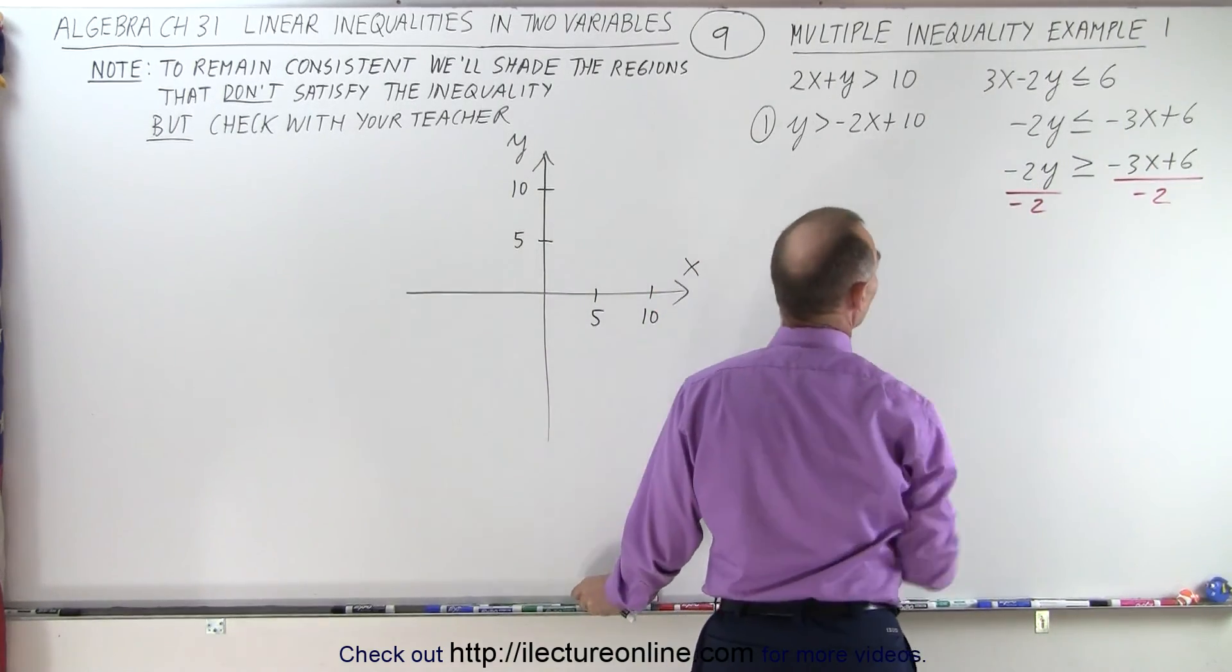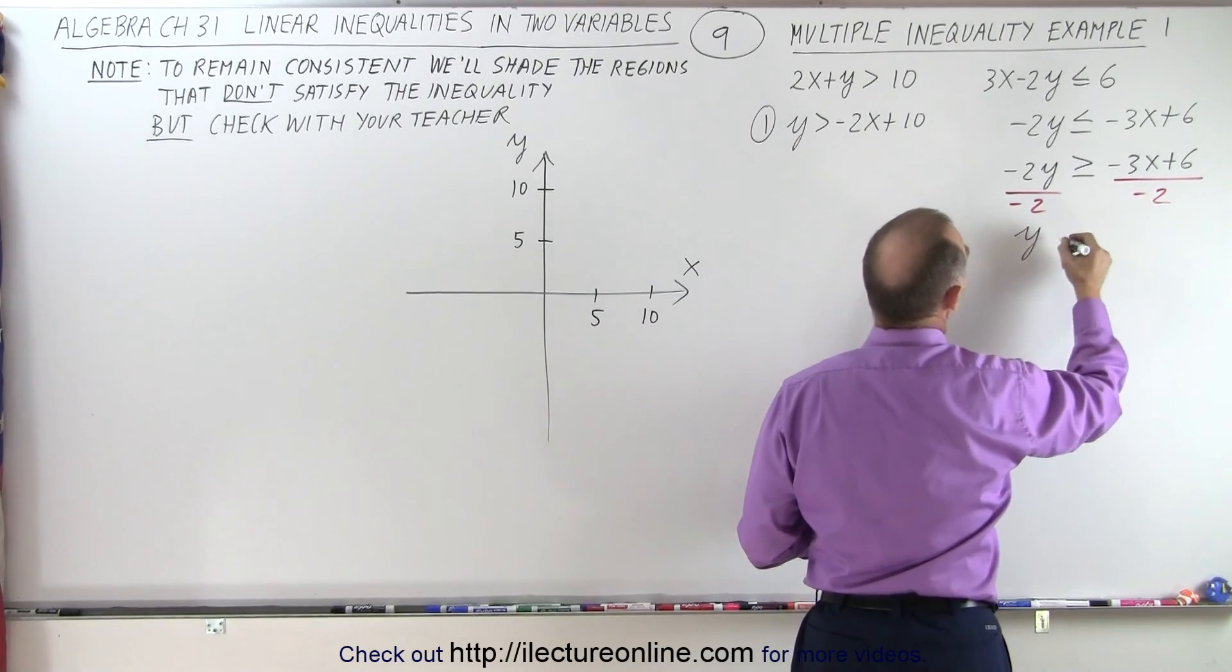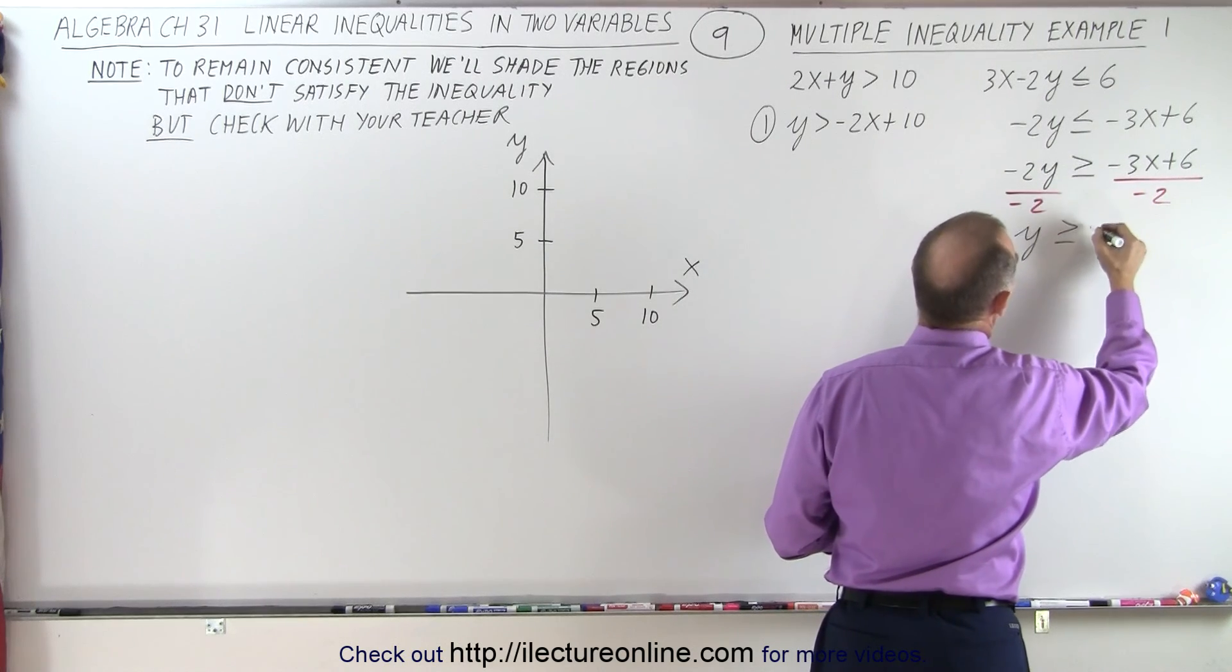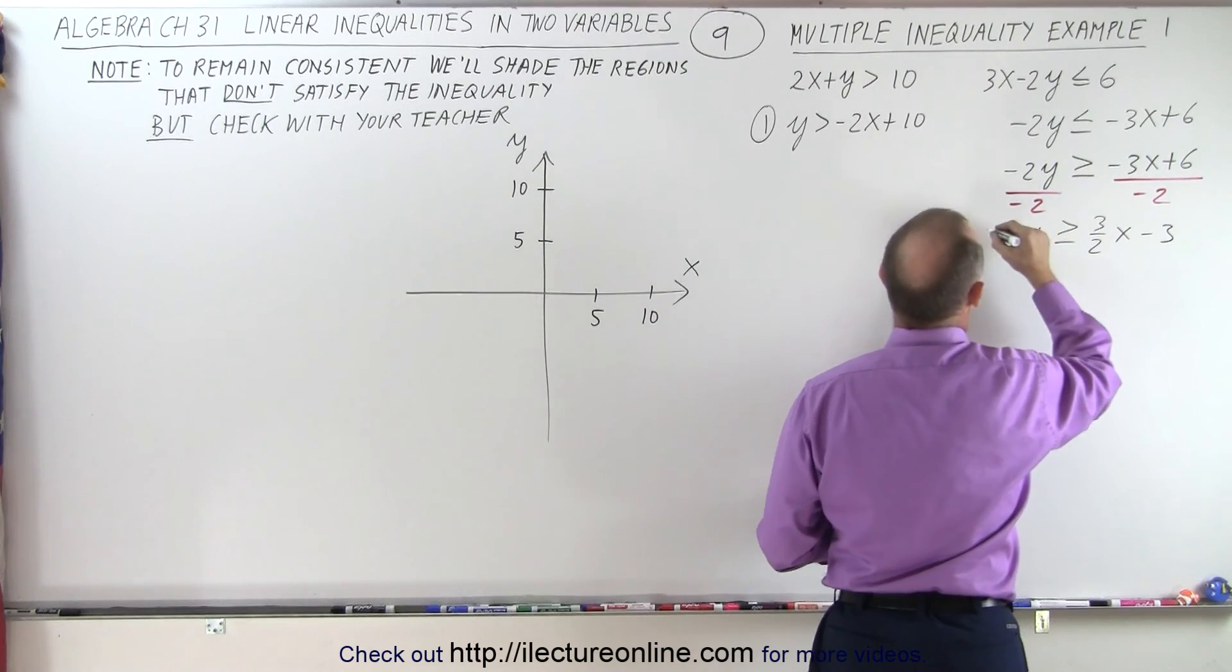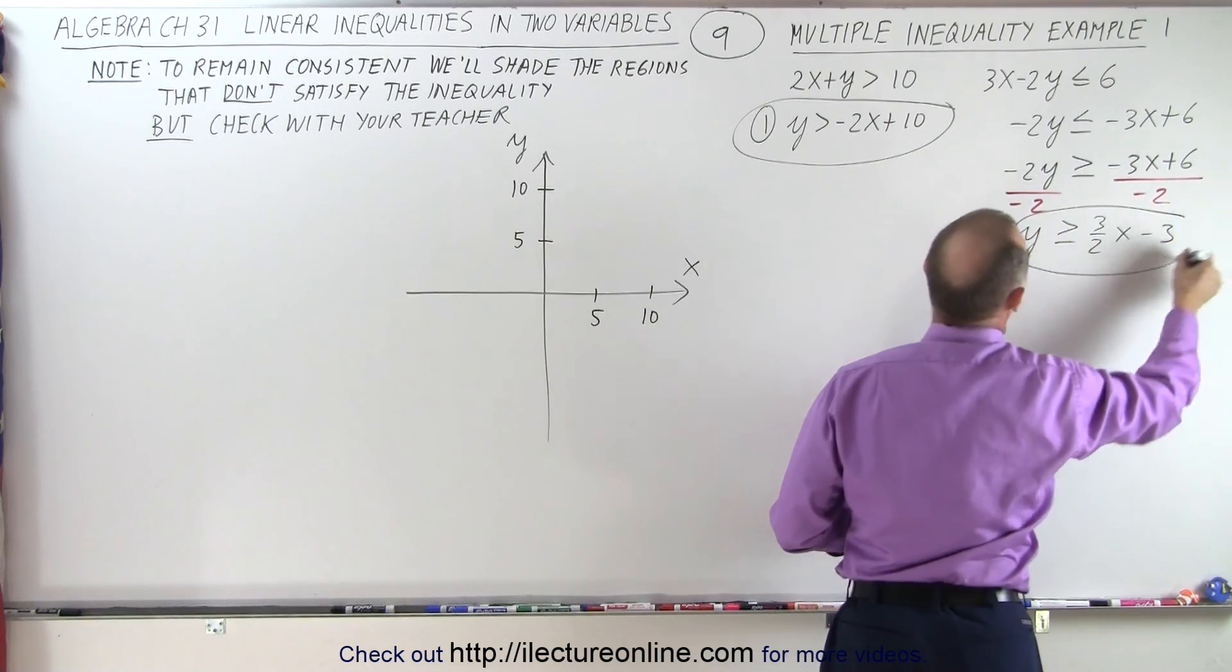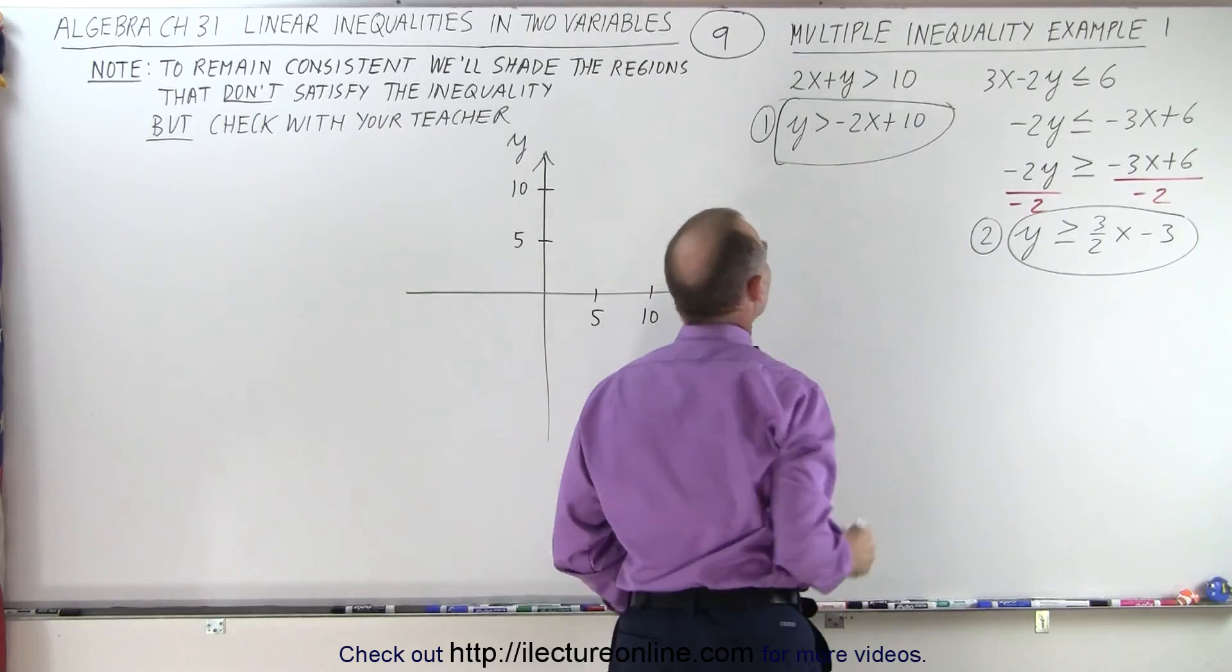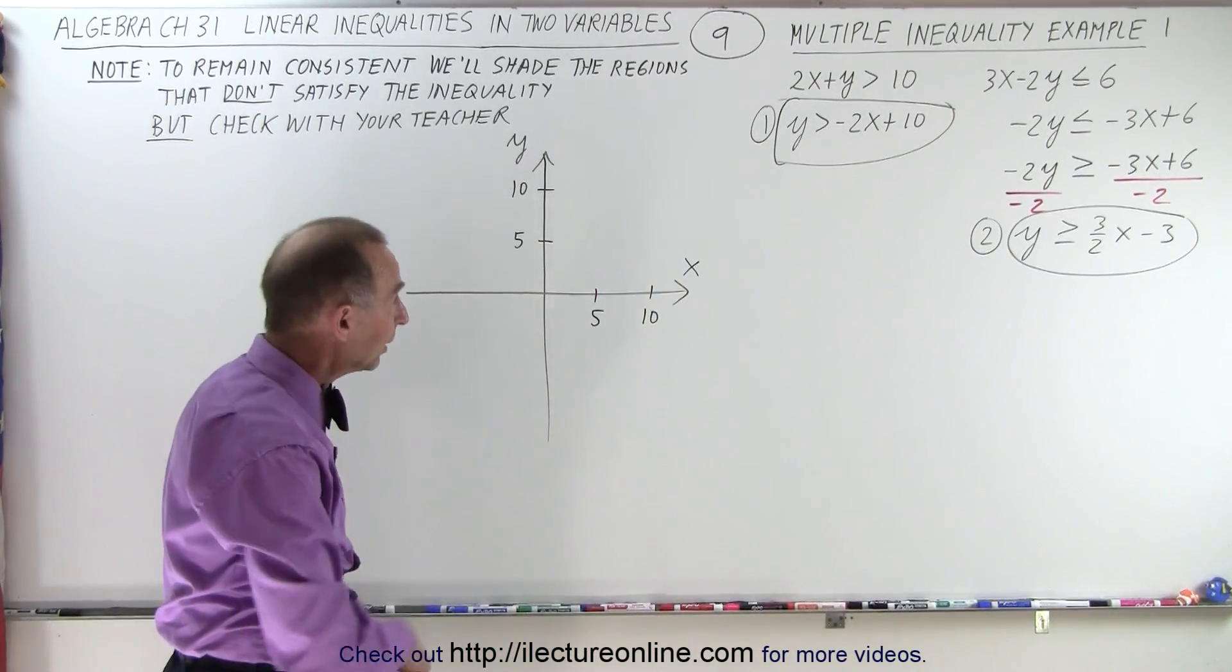Notice the inequality symbol switches around. That means we end up with y is greater than or equal to 3 over 2x minus 3. Here's equation number 2. Two inequalities in the correct format.